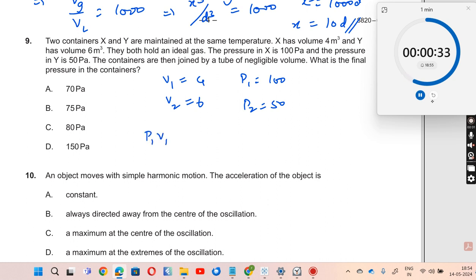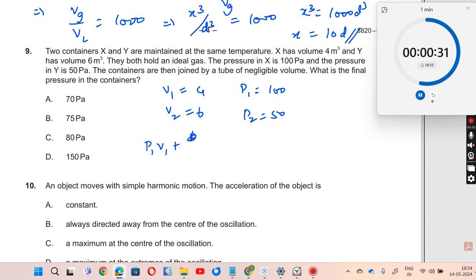Therefore, we can now write P1V1 plus P2V2 is equal to P times V dash. Now we already know all this. What is P? That is what is being asked. What is the final pressure? What is V dash? V dash is nothing but the total volume, which would be 4 plus 6 is equal to 10 over here.